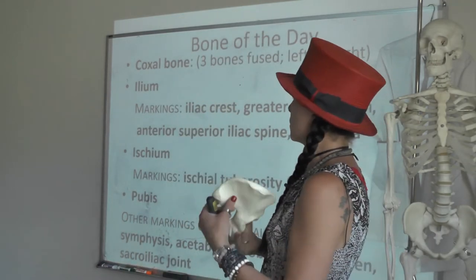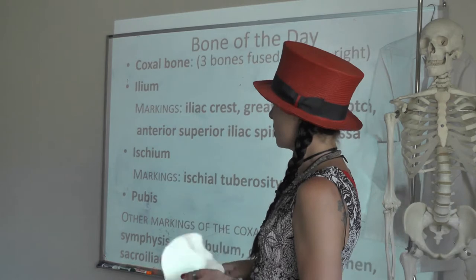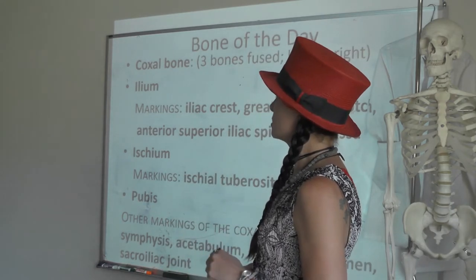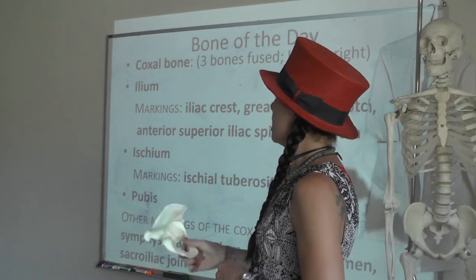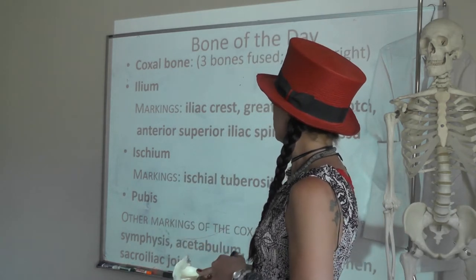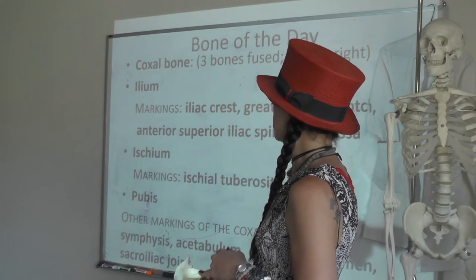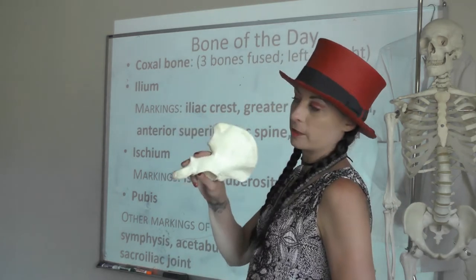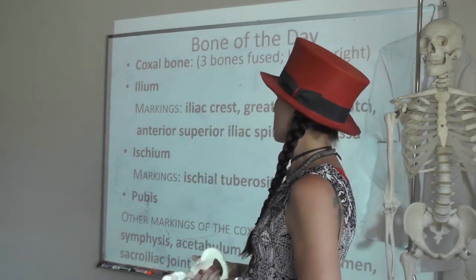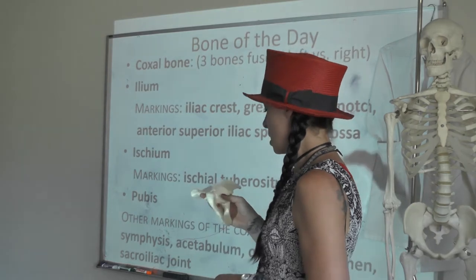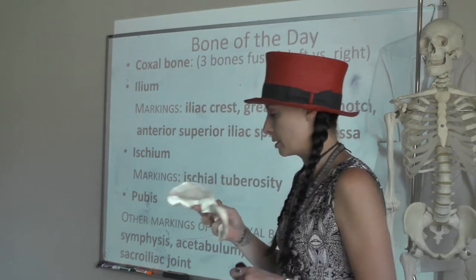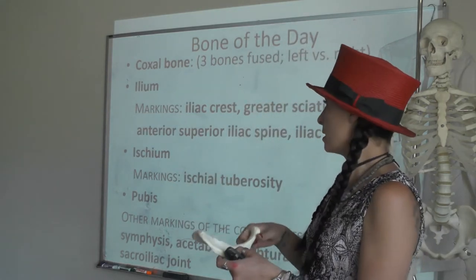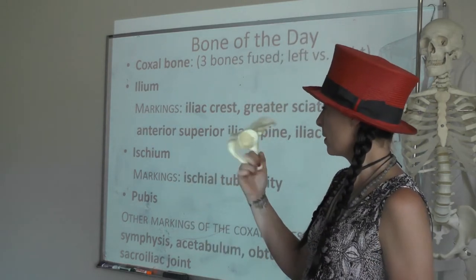This bone is called the coxal bone or the oscoxa and it's made of three fused bones. You're going to need to be able to identify your left versus your right oscoxa, and we'll look at some bone markings that show you how to do that as we move forward.